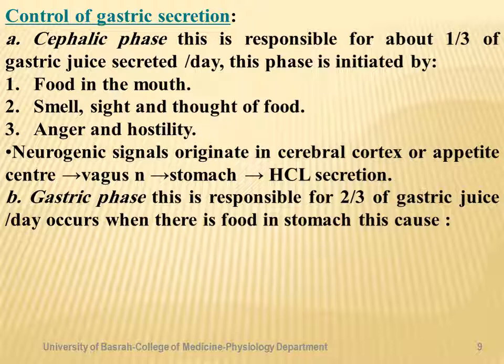Neurogenic signals originating in the cerebral cortex or appetite center lead to stimulation via the vagus nerve to the stomach parietal cell. Acetylcholine acts on specific receptors of the parietal cell, and also stimulates G cells to release gastrin hormone, which in turn acts on the parietal cell to increase HCl secretion. About one-third of gastric juice secreted per day is controlled by the cephalic phase.